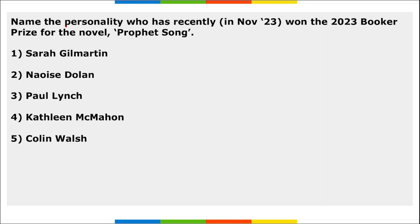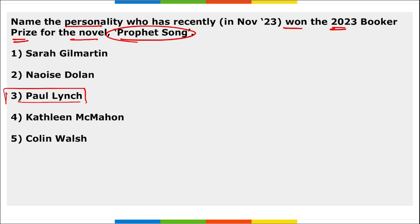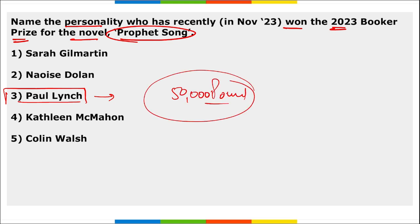Next: who won the 2023 Booker Prize for the novel 'Prophet Song'? Paul Lynch won the Booker Prize 2023 for the novel Prophet Song. He received £50,000 sterling. He is an Irish author.